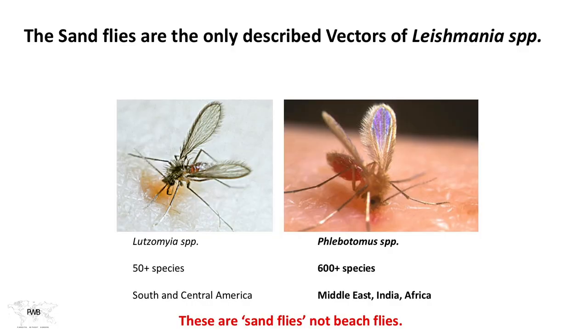Back to the vectors. In this case, the vectors are no different than they were for the other Leishmania. We have Phlebotomus species in the old world and Lutzomyia species in the new world. They're all capable of transmitting all forms of leishmaniasis.